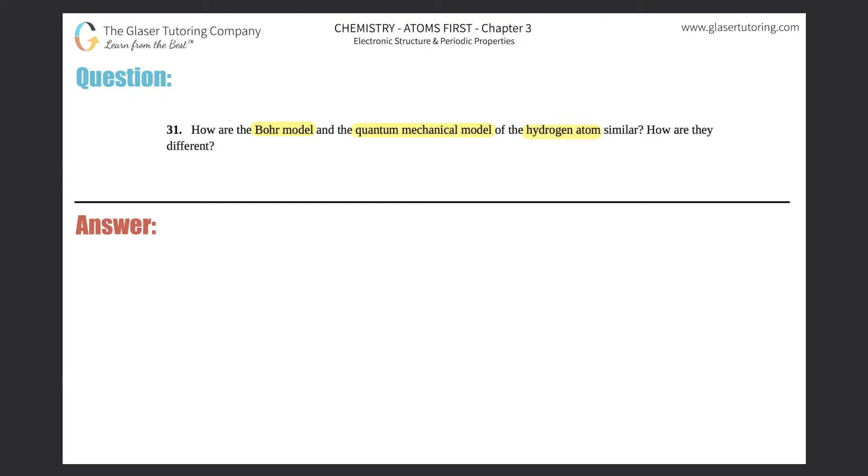So the similarities for both are that they're both models of hydrogen, right? The differences is that one is the scientist Bohr and the other one is the quantum mechanical model. So different names means differences. Thanks so much for tuning in. See you guys all in the next video. And if you want, click the subscribe. I'm kidding. Gotcha. Did I get you?